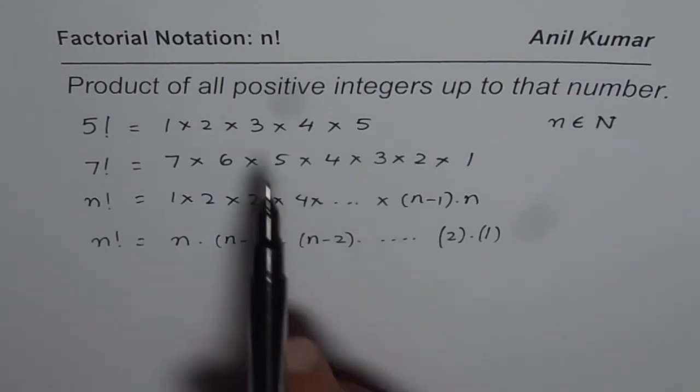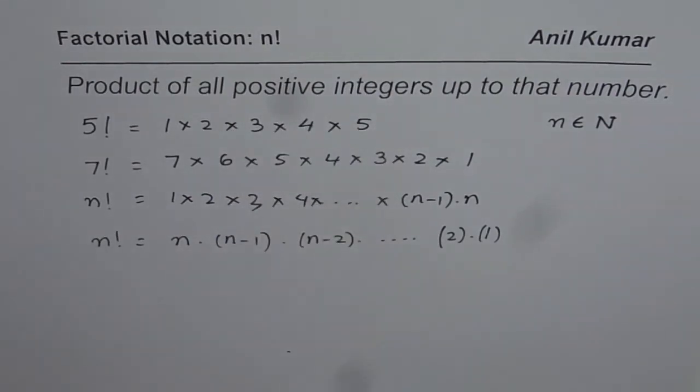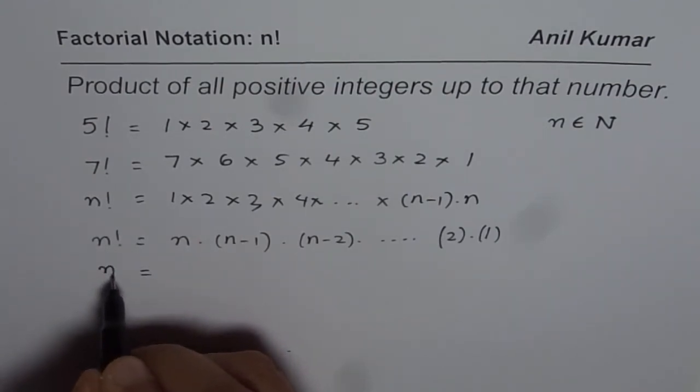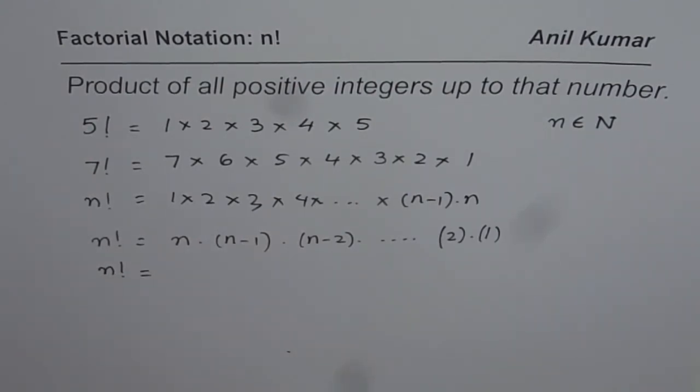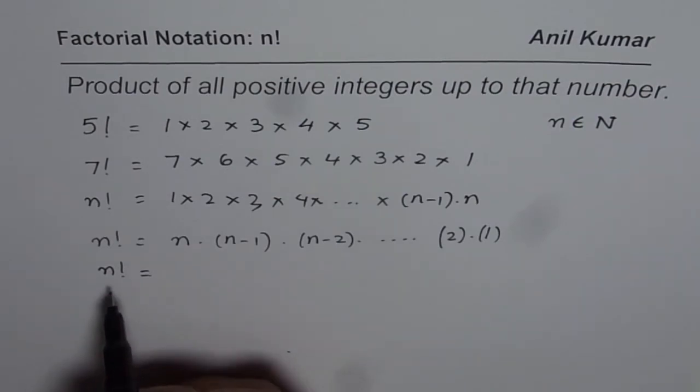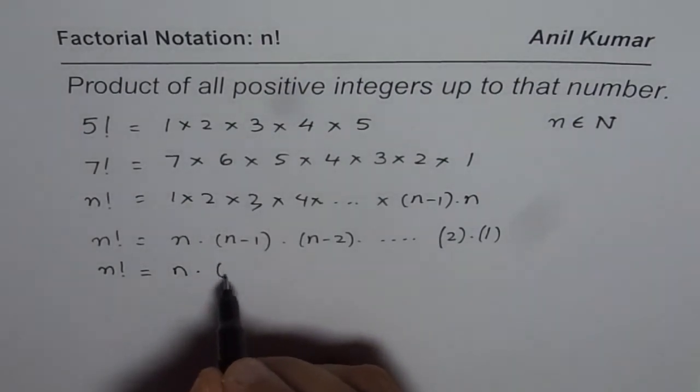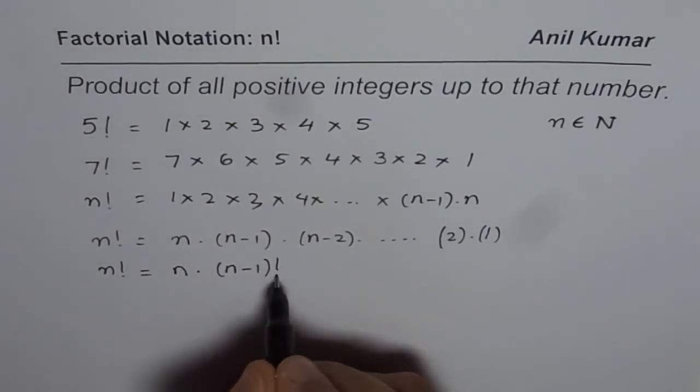So product of all positive integers up to that number is n factorial. Now, from the last statement, we can actually write down a very interesting statement or equation. n factorial, as you can see here, can also be written as n times n minus 1 factorial.